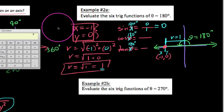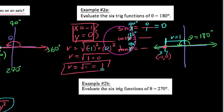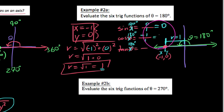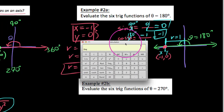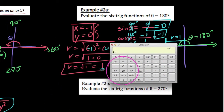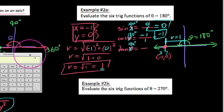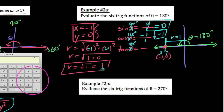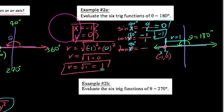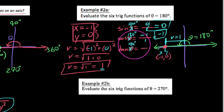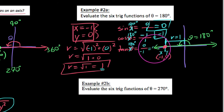For cosine of 180 degrees, cosine is x over r. The x value is negative one and r is one, so cosine of 180 equals negative one. A calculator confirms this. For tangent of 180 degrees, tangent is y over x: y is zero and x is negative one, so tangent of 180 equals zero.